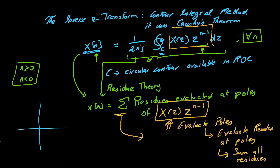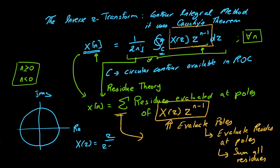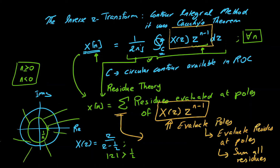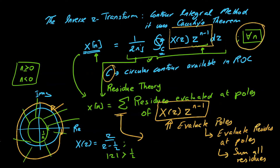To illustrate, consider the Z-plane with its unit circle, real axis, and imaginary axis. For example, if X(z) = z / (z − 1/2) with |z| > 1/2, there is a pole at 1/2 and the ROC is outward. The contour C is evaluated within the region of convergence in the counterclockwise direction, and it is linked to the time index n.